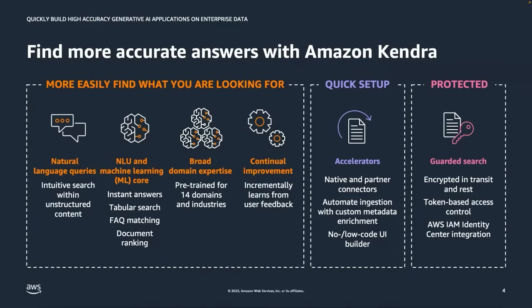Amazon Kendra is based on a natural language understanding core and on the front end it supports natural language queries. It also has the ability to provide instant answers using an extractive mechanism — if an answer to a question lies in one of the documents indexed in Amazon Kendra, Kendra will surface that answer for you without generating any new information. Amazon Kendra will also rank documents based on their relevance to the user's query.